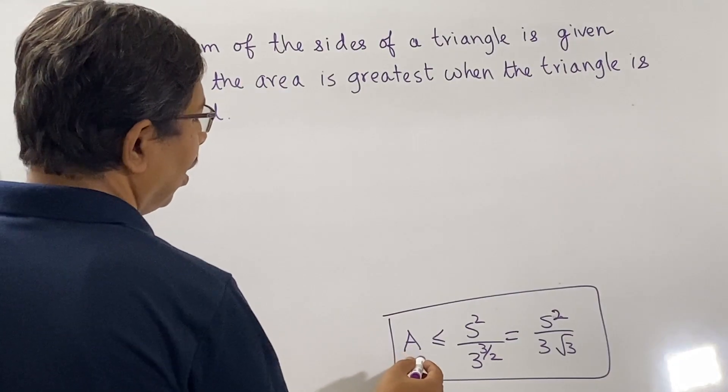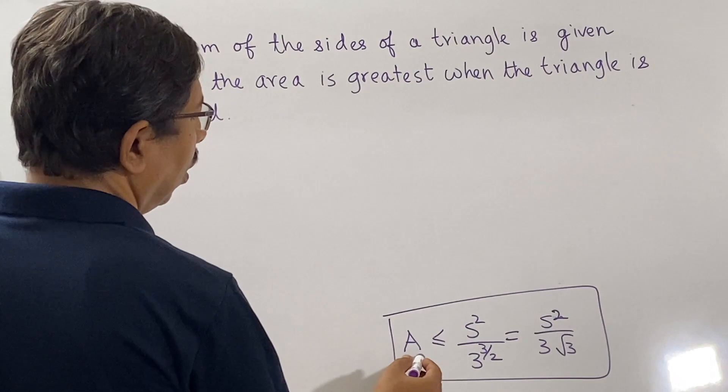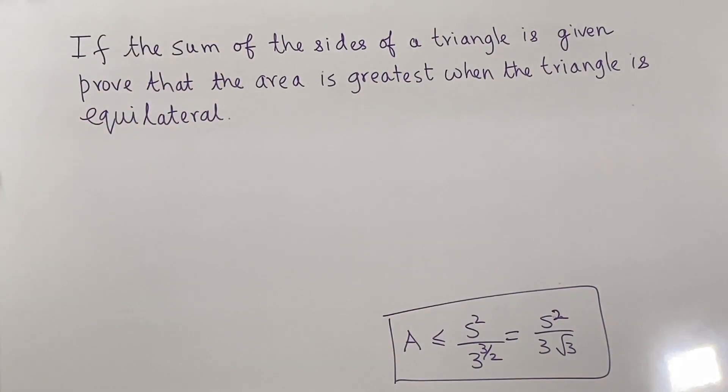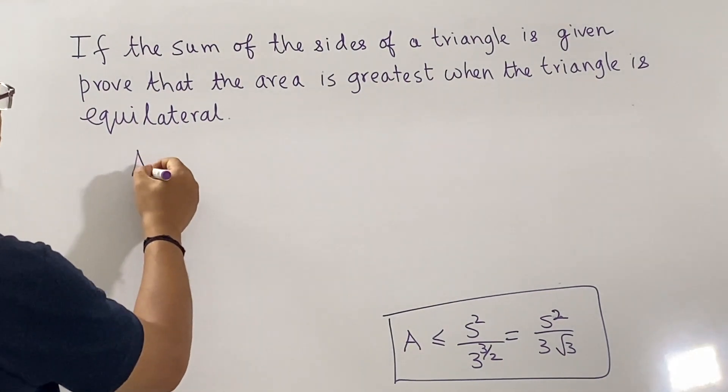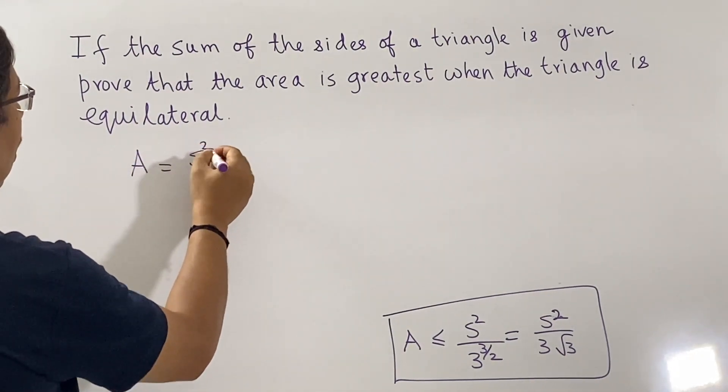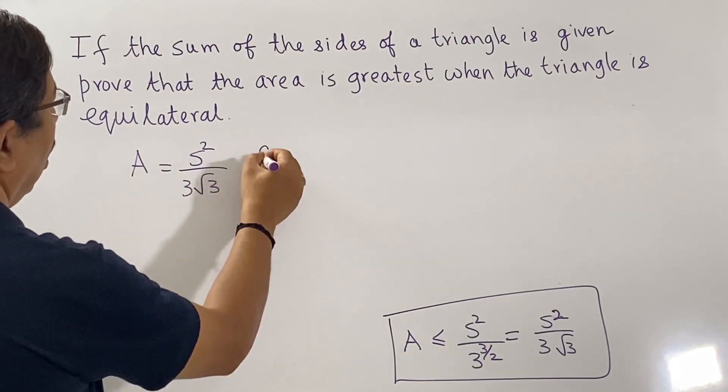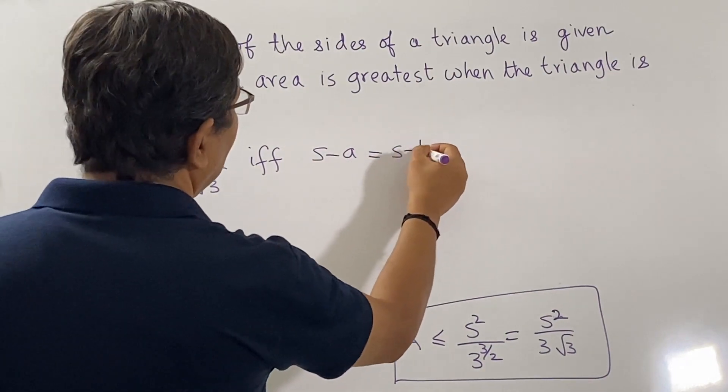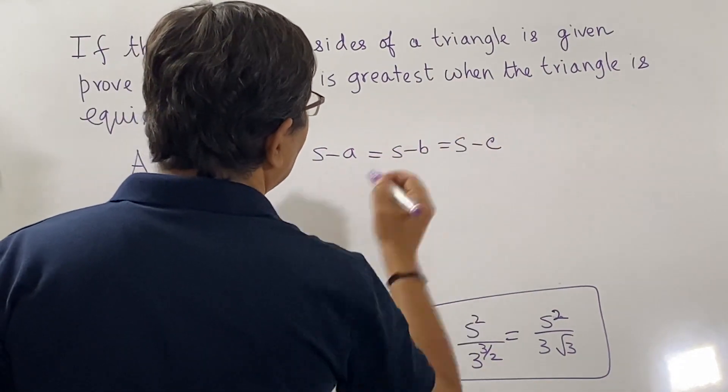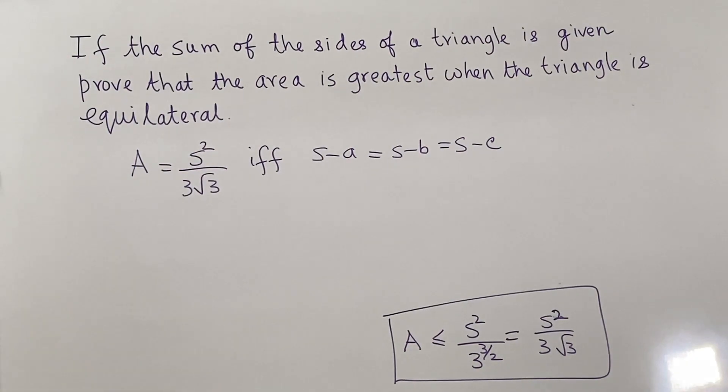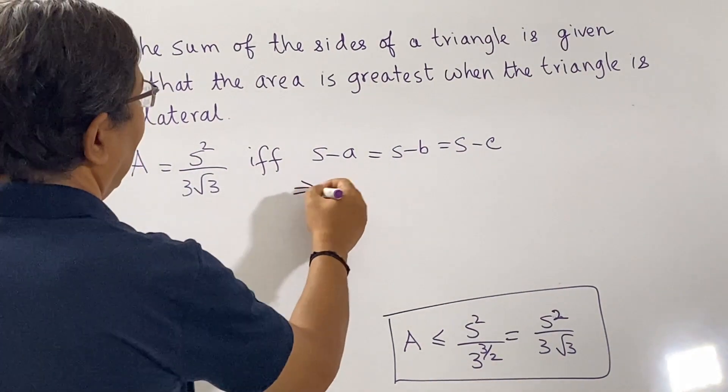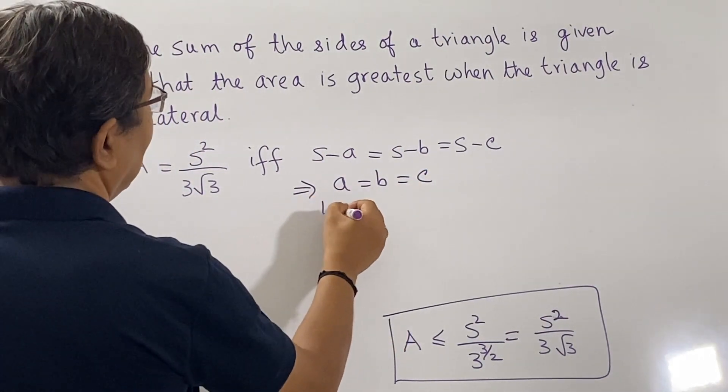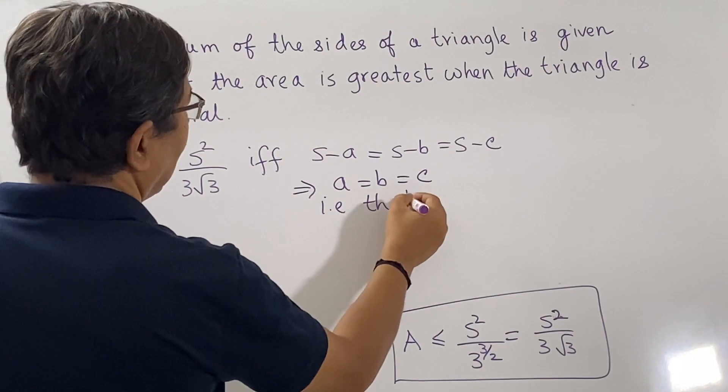Equality holds in this inequality, area equals S squared by 3 root 3, if and only if S minus A is equal to S minus B is equal to S minus C, which means that A must be equal to B is equal to C. That is, the triangle is equilateral.